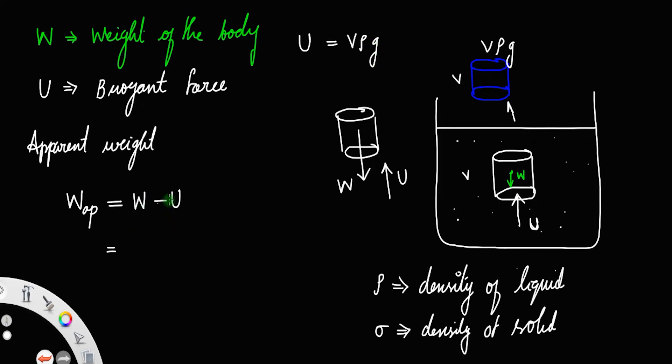The weight of the body is equal to mass times gravity, but m is equal to density of the solid times volume, so W equals V sigma g. Therefore W_ap equals V sigma g minus V rho g. You can take the V g outside; it will be sigma minus rho.